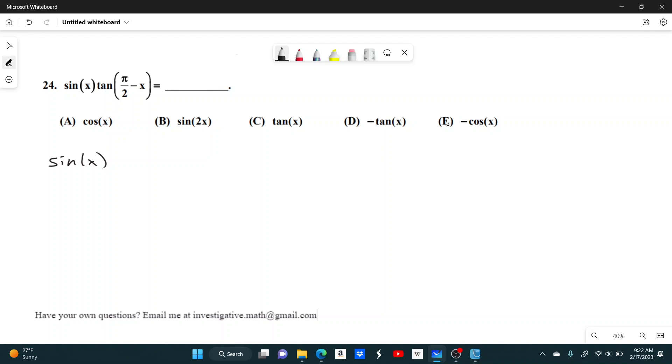There's a list of identities called cofunction identities, which is basically just what happens whenever you do a transformation inside the parentheses. And this one happens to be 1 over the tangent of x.